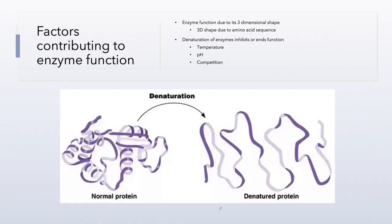There are many factors that contribute to the function of an enzyme, but the most important is its three-dimensional shape. The three-dimensional shape of an enzyme — since it's a protein — is the tertiary structure if it's a single polypeptide, or quaternary if it involves more than one polypeptide. That three-dimensional shape is critical to the function of the enzyme: function is completely and totally related to the three-dimensional shape of the molecule.